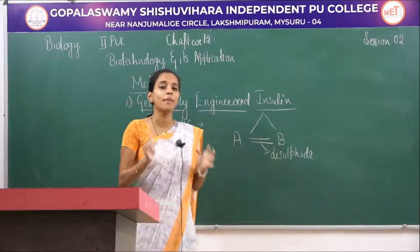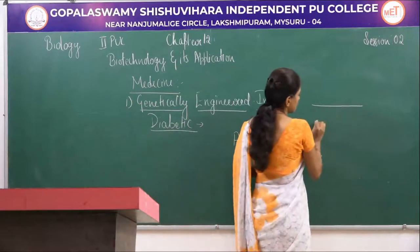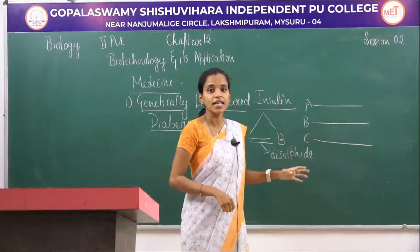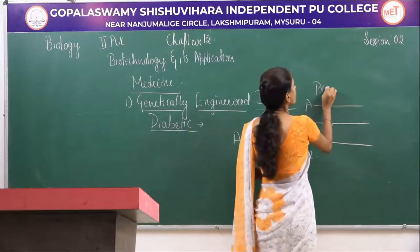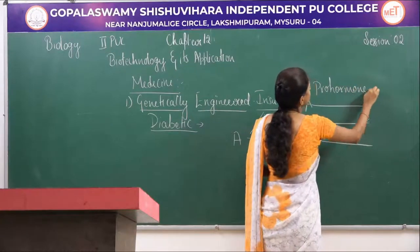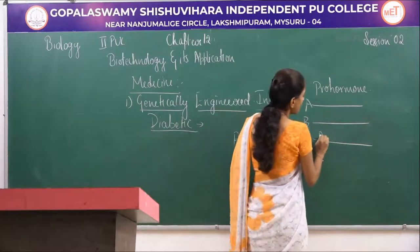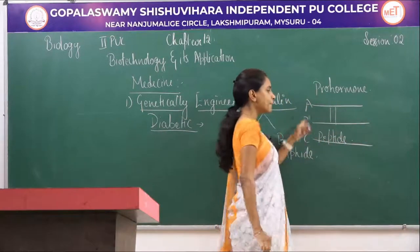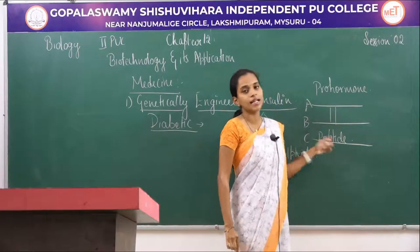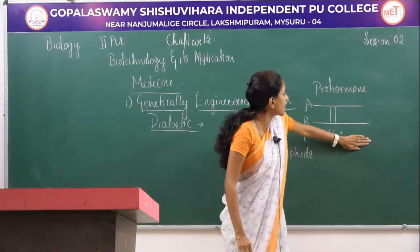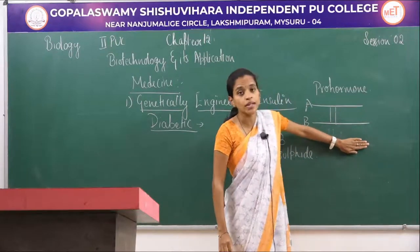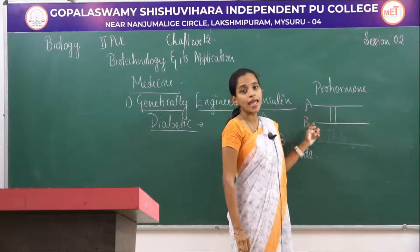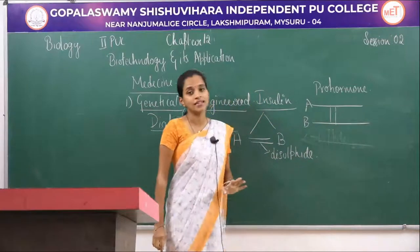In humans and other mammals, insulin is initially produced in three chains: A chain, B chain, and C chain. Initially it is in an inactive pro-hormonic form. But at maturity, the C peptide chain gets removed, and only the A and B peptide chains are retained, held together by the disulfide bridge. So the C peptide chain is present only in the immature pro-hormonic form.